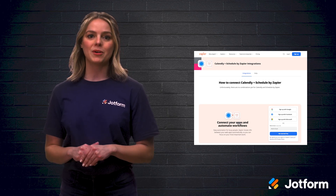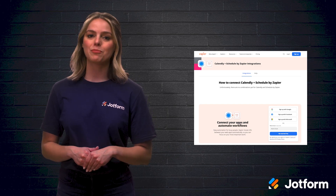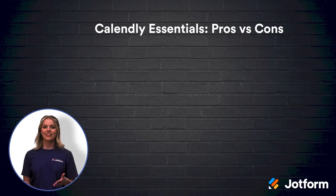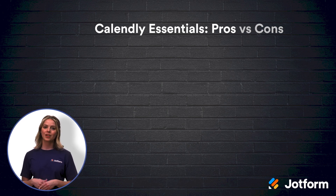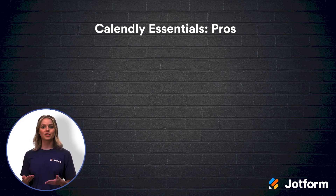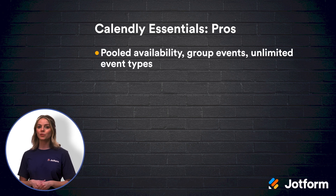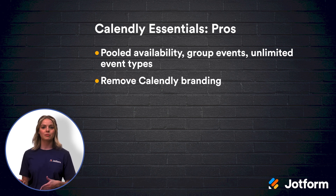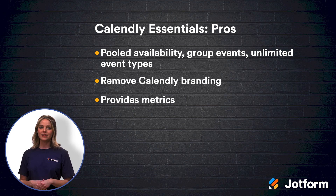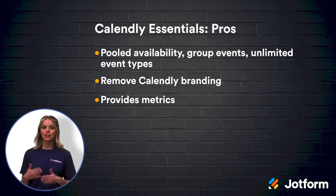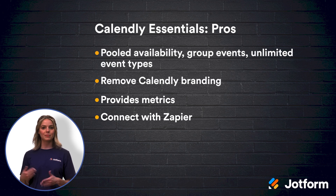Plus, you get the bonus of customizing notifications and branding. Here are some of the pros and cons of the Calendly Essentials Plan. Pros: you can better support your group meetings and events with pooled availability and unlimited event type functions. You can remove the Calendly branding for your invites. You're given metrics to track leads and pull helpful reports organized by event type. And you can connect with hundreds of apps through Zapier.